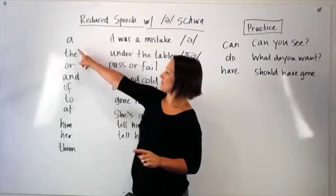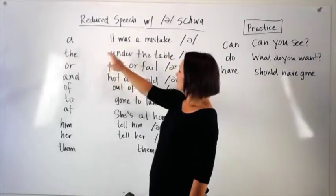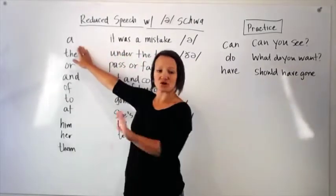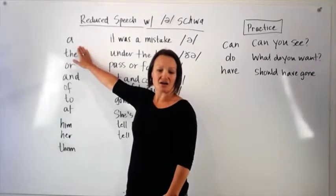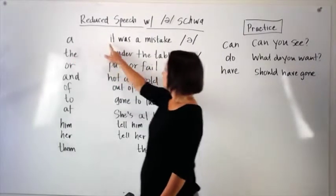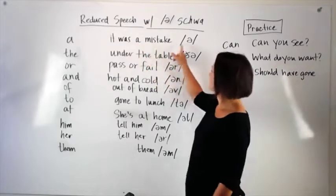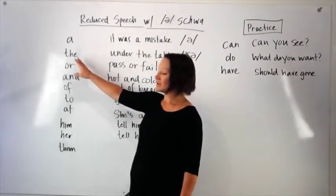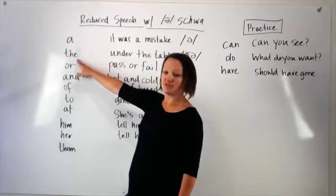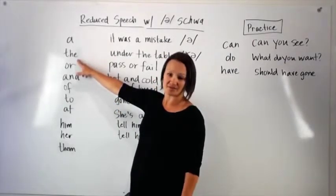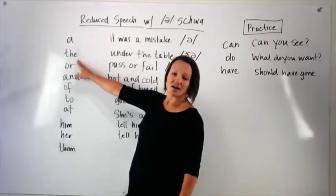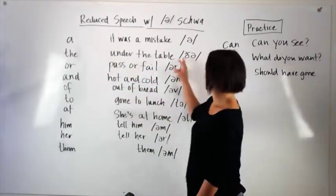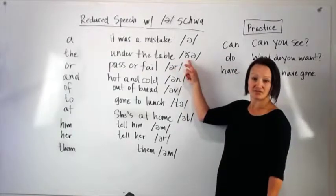For example, the word a or a. It was a mistake. That's the example. When I say this word alone, I say a or a. It was a mistake. Here's the pronunciation of that word. Here's another example. The or the sometimes people say. The is the more common way we say it. Under the table. You can hear uh in that part.